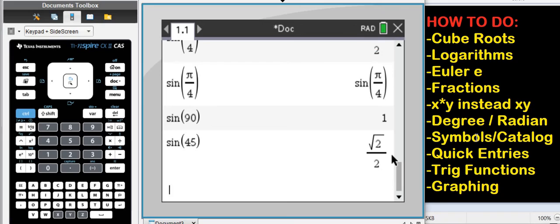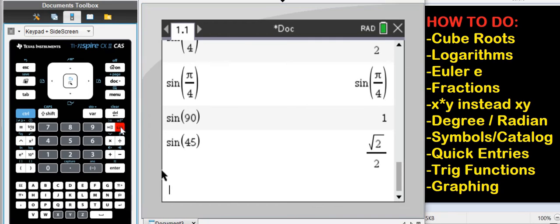Next, symbols in catalog. Notice a button under del, under delete button here, the catalog button. You see this one here?